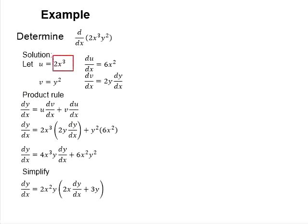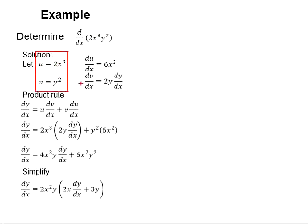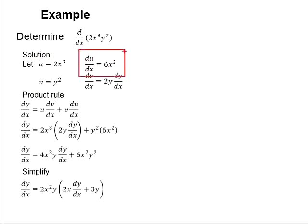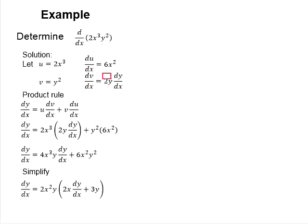Set u equals to 3x cubed, and v will be the remaining function. Differentiate u and v with respect to dx. That gives you du/dx equals to 6x squared, and dv/dx equals to 2y dy/dx, as y is a function of x. Differentiating this, you will have to incorporate dy/dx.